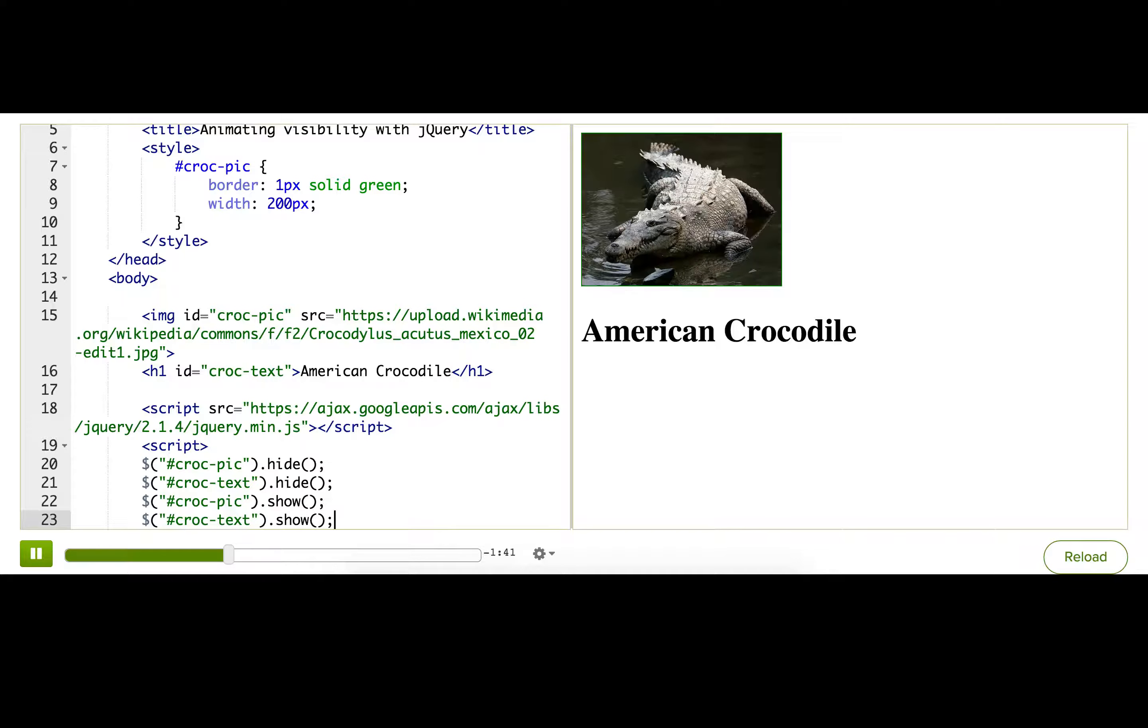One way is to pass a number as the first parameter of the show method. That number tells jQuery how slowly to animate the element being shown. There we go. And it animates it from the top left getting bigger. That's cool.